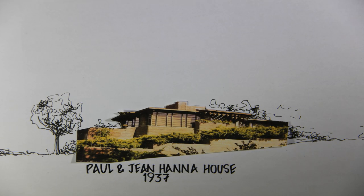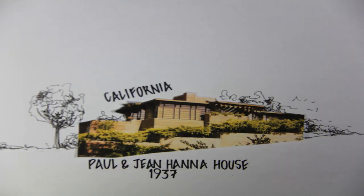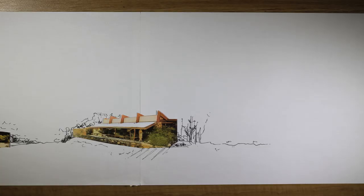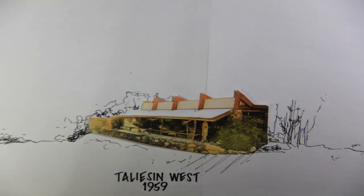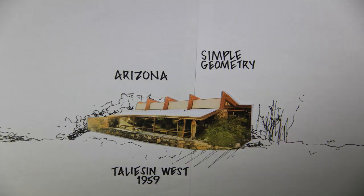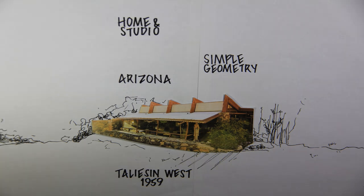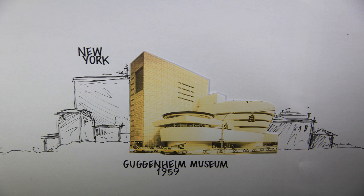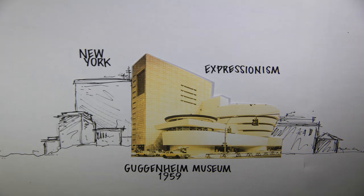The Paul and Jean Hannah House in Stanford, California was built using simple geometry. Taliesin West near Phoenix, Arizona also used simple geometry — it is Wright's own home and studio. The Guggenheim Museum in New York was built with the concept of Expressionism.